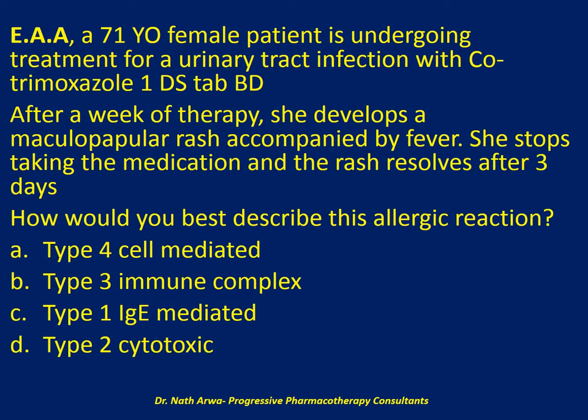The next question reads: Mrs. EAA, a 71-year-old female patient, is undergoing treatment for a urinary tract infection with Cotrimoxazole DS — one tablet orally twice a day. After a week of therapy, she develops a maculopapular rash accompanied by fever. She stops taking the medication and the rash resolves after three days. My question to you is: how would you best describe this allergic reaction? Is it a type 4 cell-mediated allergy, a type 3 immune complex type, a type 1 IgE-mediated allergy, or a type 2 cytotoxic type? I'll give you 10 seconds to choose the correct answer.